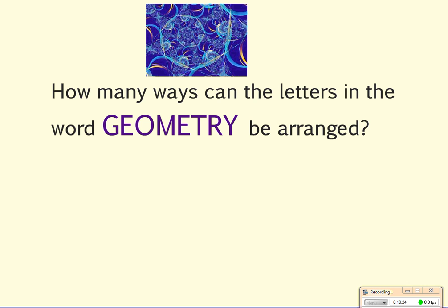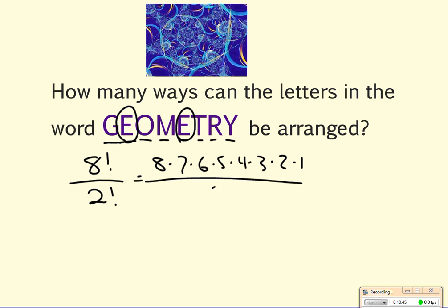So, how many ways can I do the letters for geometry? Well, 1, 2, 3, 4, 5, 6, 7, 8. So, 8 factorial over, let's see. I've got 2 E's. And I think that's it. So, this becomes 8, 7, 6, 5, 4, 3, 2, 1 over 2 times 1. So, I get 8 times 7, times 6, times 5, times 4, times 3. So, that's going to be 20,160.